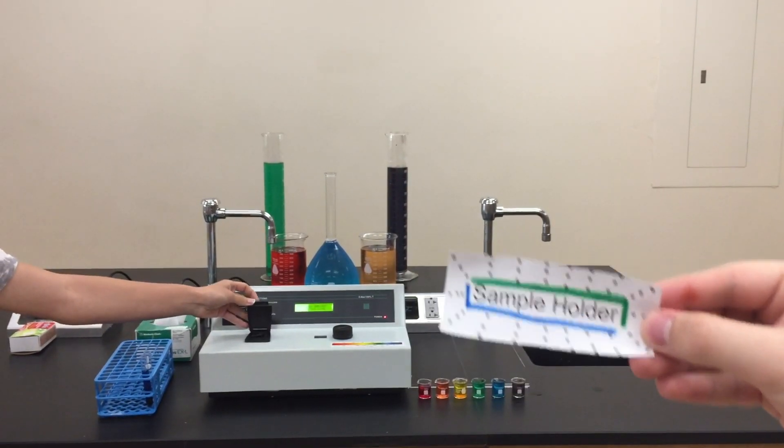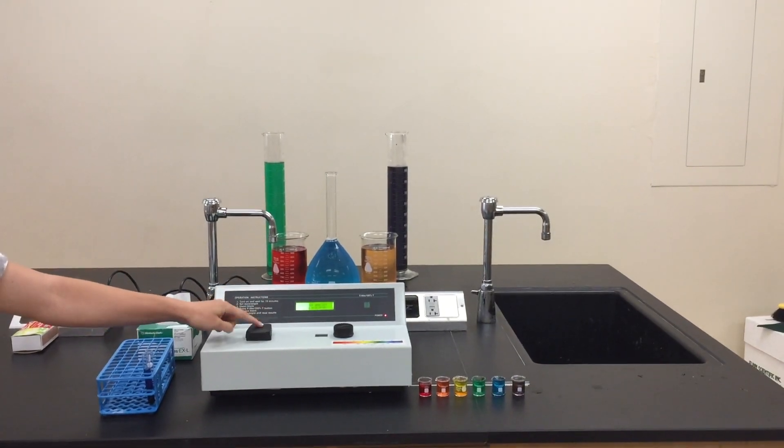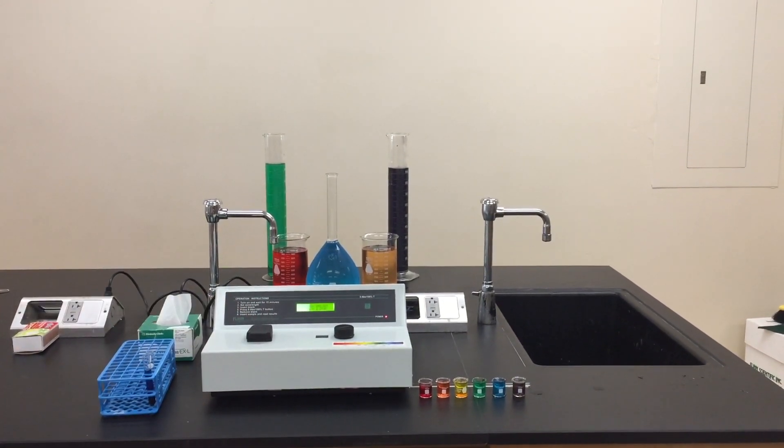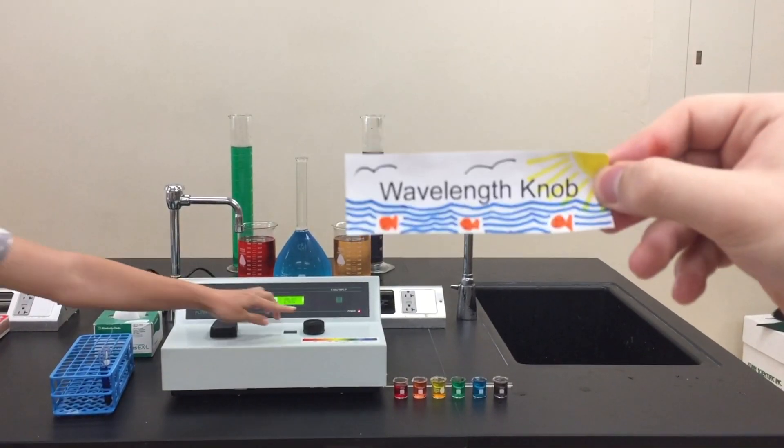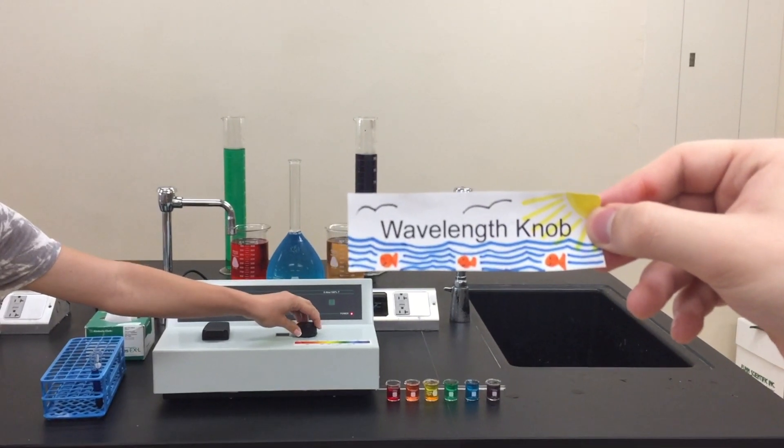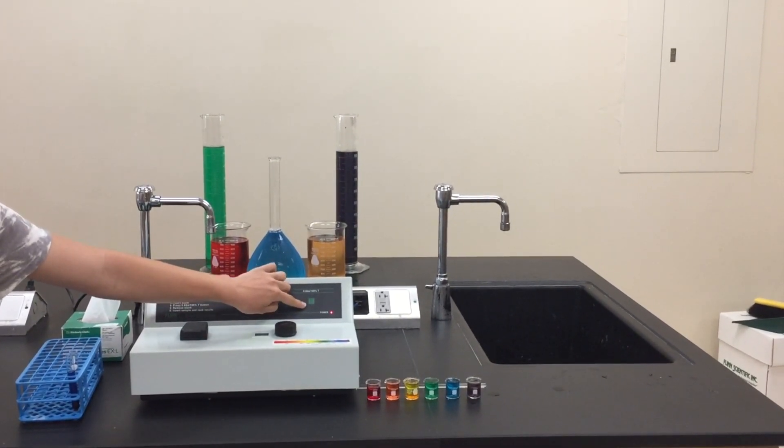This is the display where the values will be shown. This is the wavelength knob; it adjusts the wavelength of the light that will be sent through the solution. Lastly, this is the calibration button, which is used when blanking the machine to ensure the accuracy of the measurements.